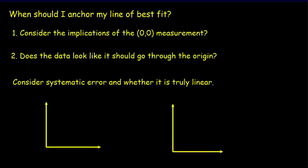Now, another important consideration is whether or not you should anchor your line of best fit to the origin. And the first thing you've got to do is consider the implications of making that zero-zero measurement. So, for instance, say you're doing a measurement where you're dropping balls from different heights, and you're measuring the amount of time it takes for them to hit the ground.